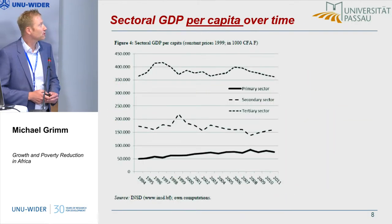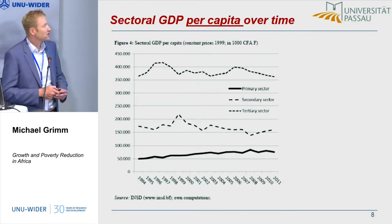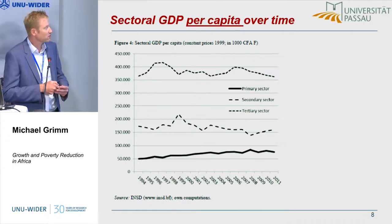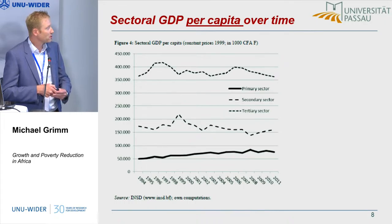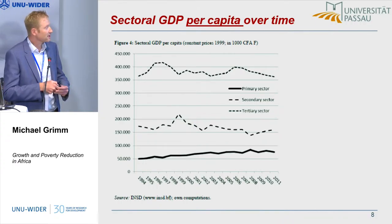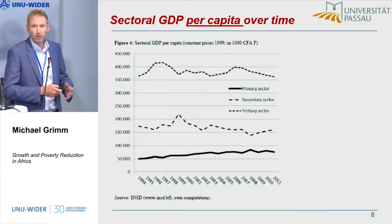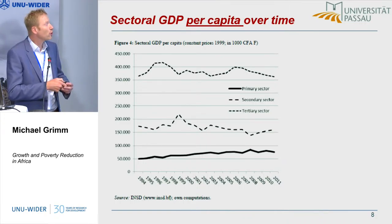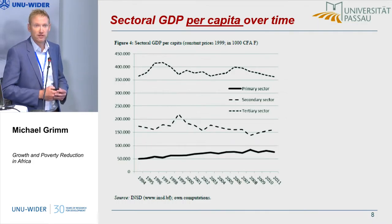If you bring this into sectoral GDP growth, there's no per capita growth in the tertiary sector over the entire period, and really no growth in the secondary sector — even going down a bit. There's just a little growth in agriculture. Of course, there are huge differences in income level across sectors, so one source of growth is simply that people moved from the lower-income sector to the higher-income one. But we do not see any growth in productivity within these sectors.